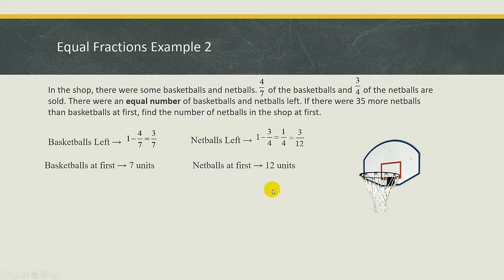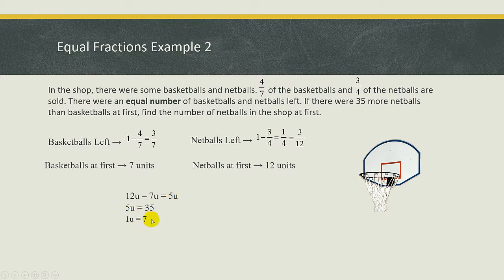So now how do we find 1 unit? The question says there were 35 more netballs than basketballs. So you need to find the difference: 12U minus 7U will be 5U. So 5 units equals 35, and 1 unit will be 35 divided by 5, which is 7. The question asks for the number of netballs at first, so the answer will be 12 units, which is 12 times 7, giving an answer of 84.